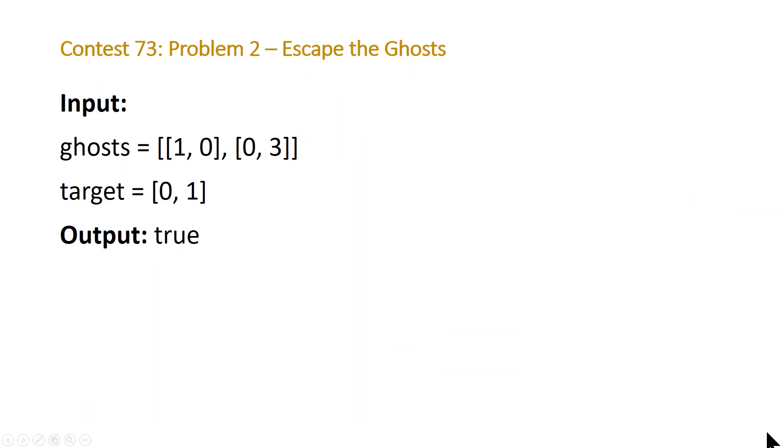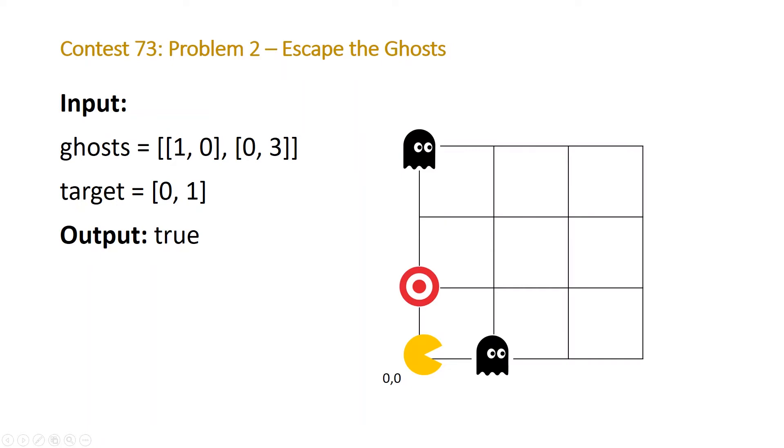So in this example, we've got two ghosts and a target of 0, 1, and it outputs true. So this is what visually it looks like. And you can see here that after one move, Pac-Man can reach our target by just going up, and then the ghosts, this one will either go up or left if it's moving optimally, and this one will go down, but it won't matter because Pac-Man reaches the goal. So return true.